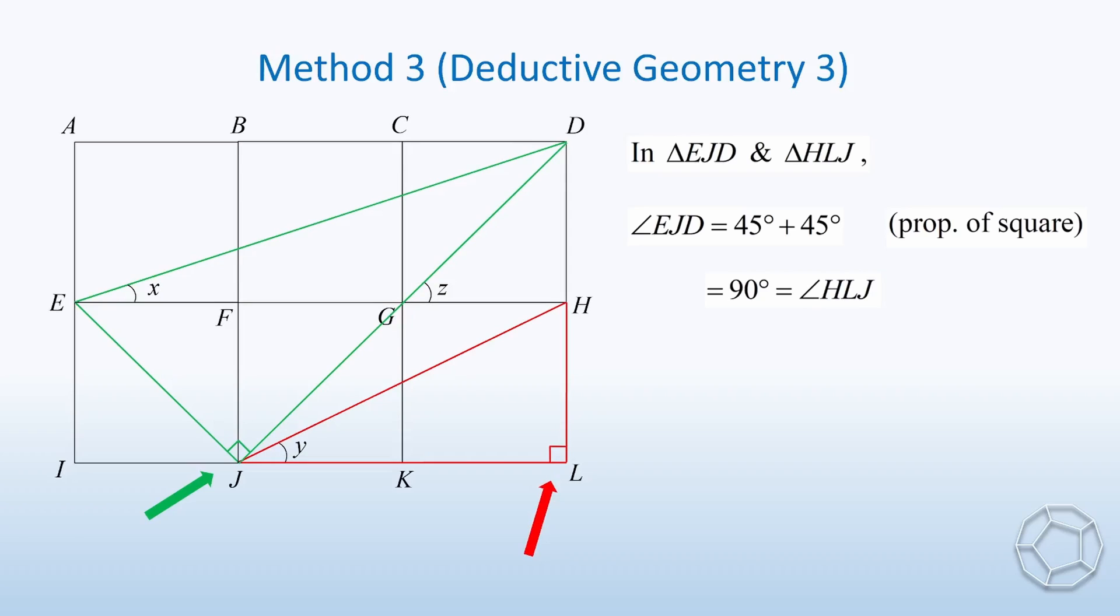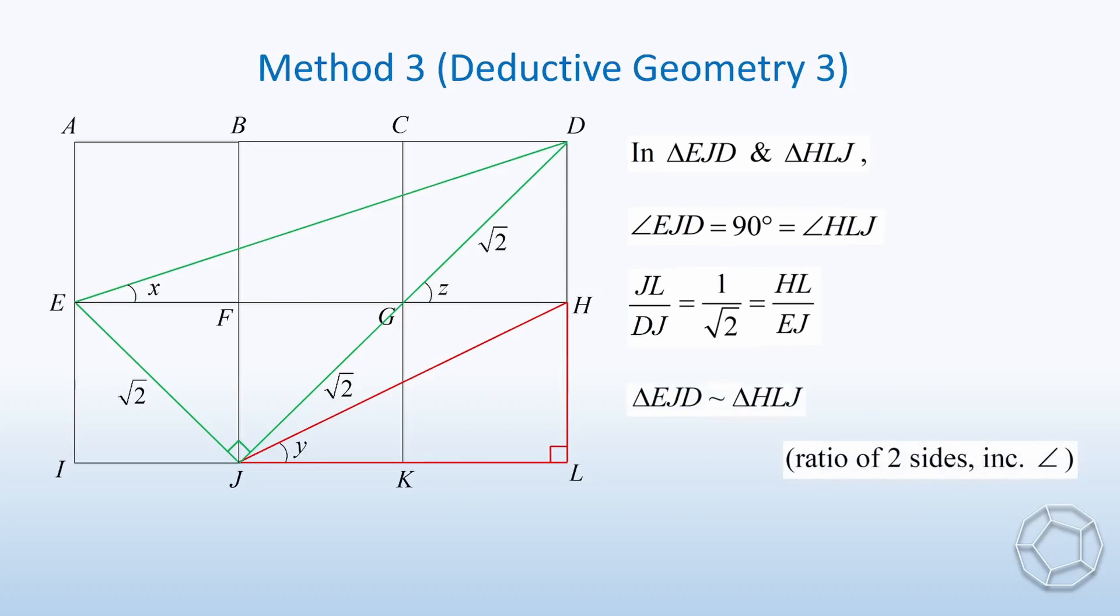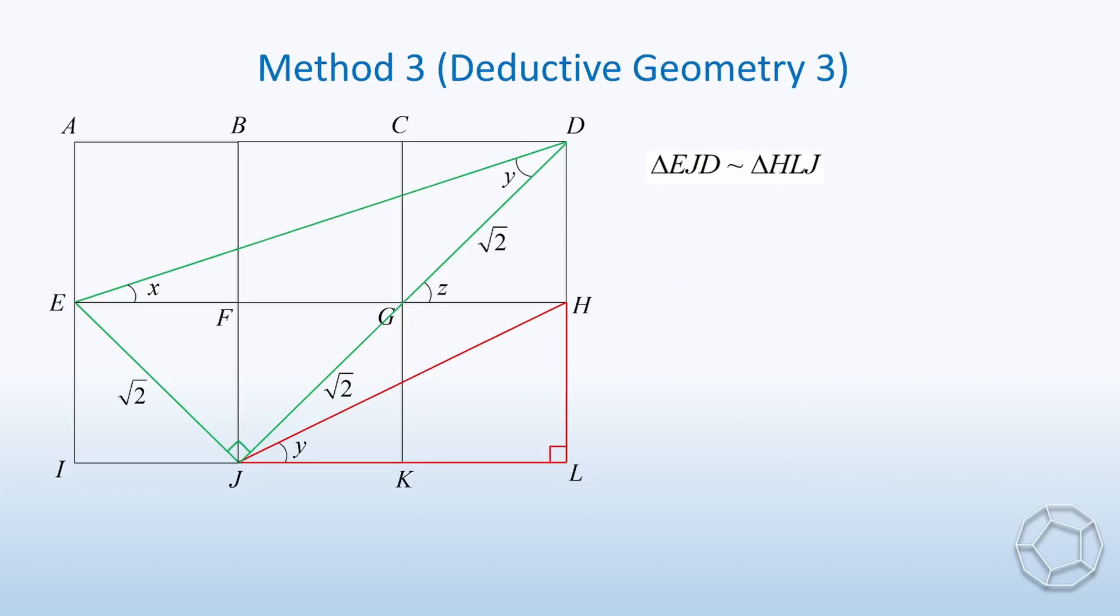Let's figure out the ratio of sides as well. From method 1, we have the hypotenuse DJ being square root 2. Likewise, EJ and GJ are also equal to square root 2. For the ratio of first pair of sides, HL over EJ is equal to 1 over square root 2. When it comes to the second pair, JL over DJ is equal to 2 over 2 times square root 2, which is equal to 1 over square root 2. So we have two pairs of sides with equal ratio. In other words, the two triangles are similar, because of ratio of two sides including the angle. Using this result, we can say that these two angles are both equal to y, because of corresponding angles, similar triangles.